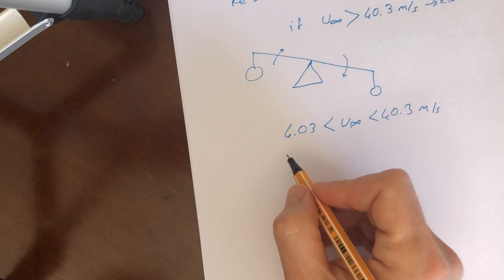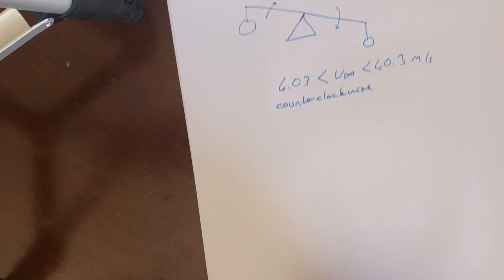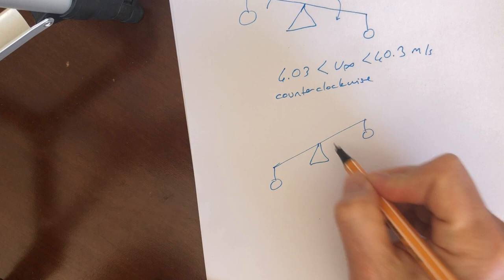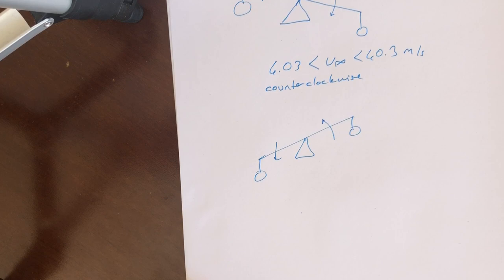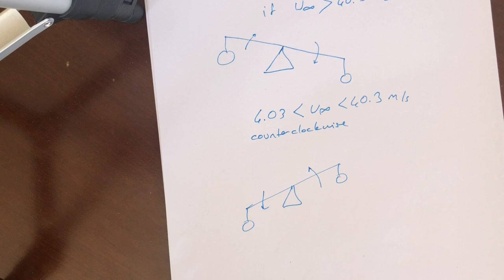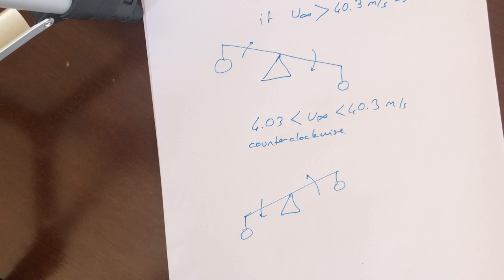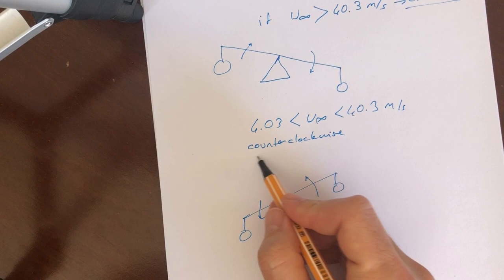We can get the counterclockwise direction. It means that the balance arm, we can do like this, counterclockwise situation we can get. In this case, we solve the question: which velocity is necessary to get the balance arm from clockwise and then counterclockwise.